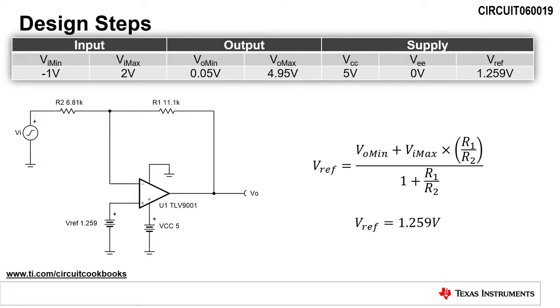Lastly, we need to calculate the reference voltage. Rearranging the transfer function to solve for V_ref, we see that V_ref equals (V_O_min + V_I_max × R1/R2) divided by (1 + R1/R2). Using this equation, we calculate a reference voltage of 1.259V.